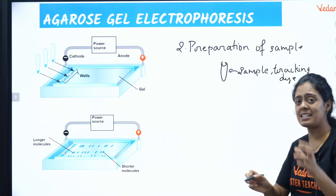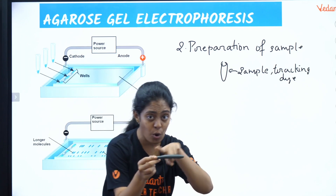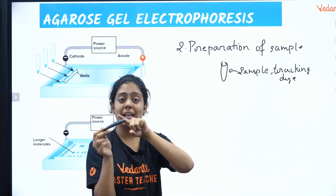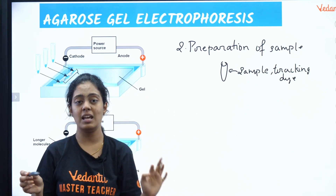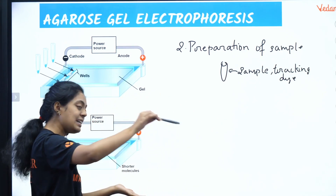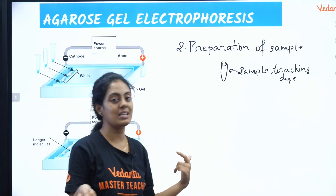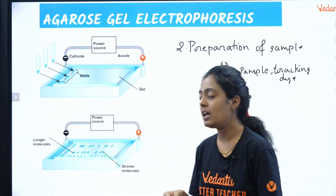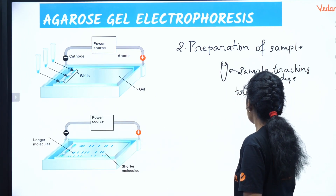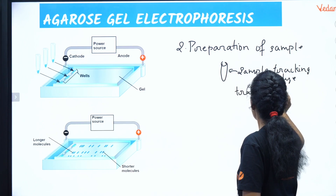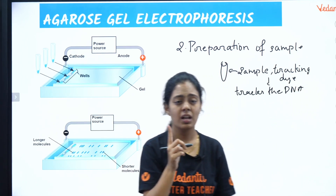Why do I add this tracking dye? To track my DNA — to track the movement of DNA. Tracking dye and stain are different things. Can I see DNA with my naked eyes? Especially in this case, I cannot see it. So this tracking dye tracks the movement of DNA through the gel.